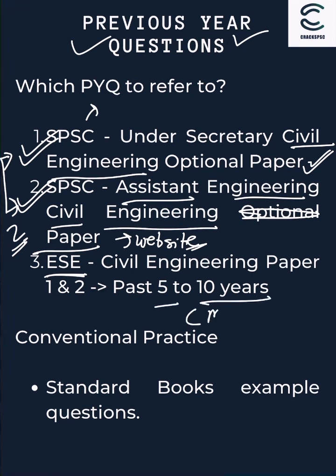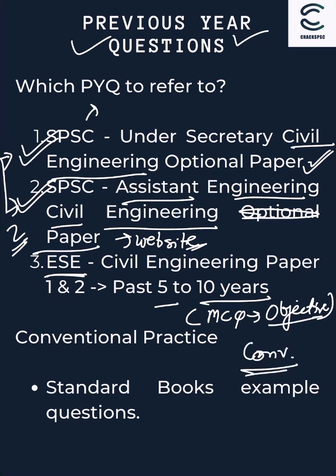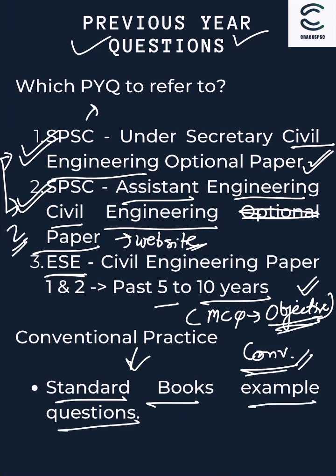The Engineering Service Exam has both objective and conventional question types. The objective questions tend to be conceptual and have simple numerical questions. The conventional questions follow a higher standard. You can use the objective questions to practice concepts, and then move to theory from standard books with example questions for conventional practice.